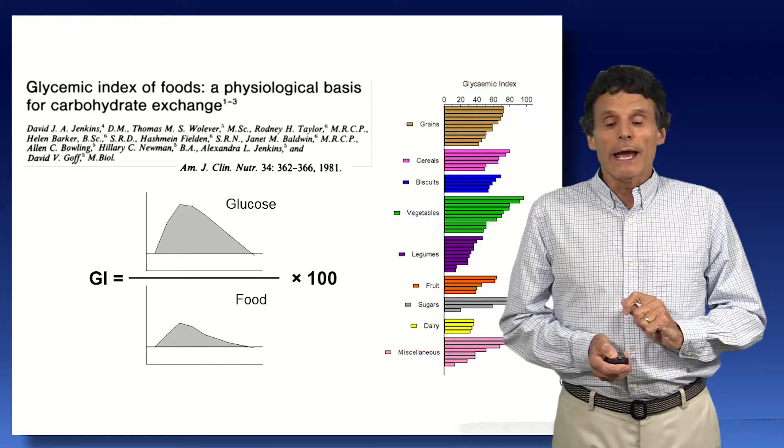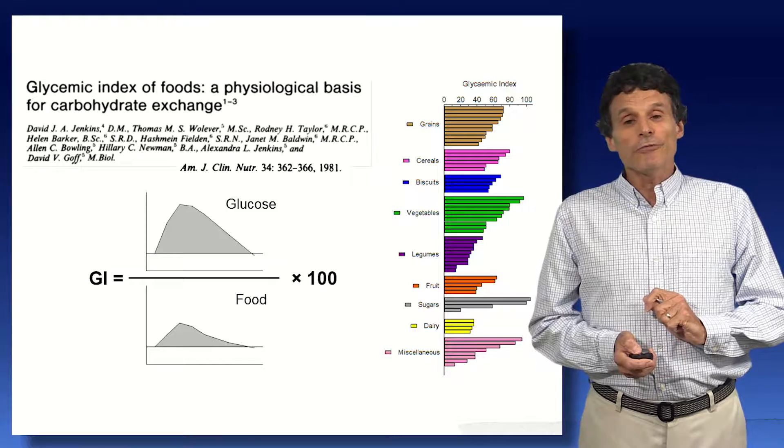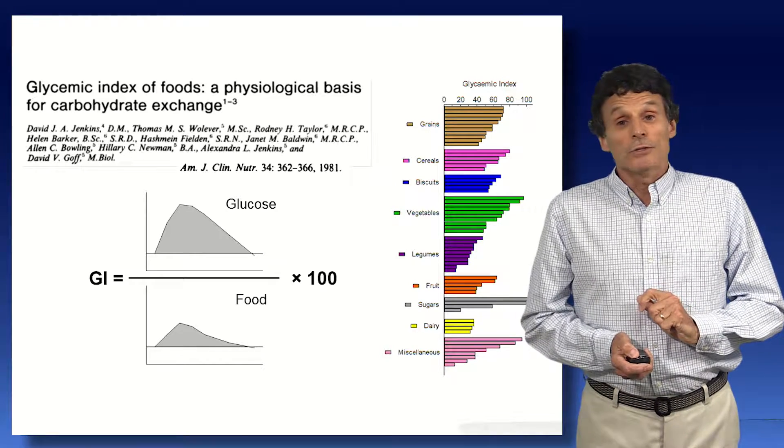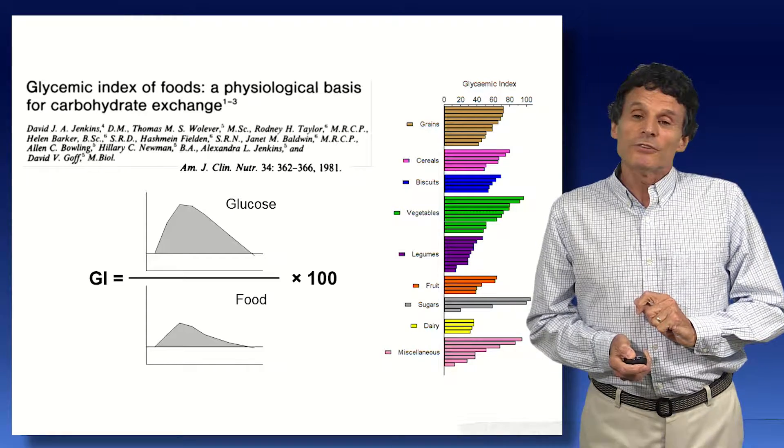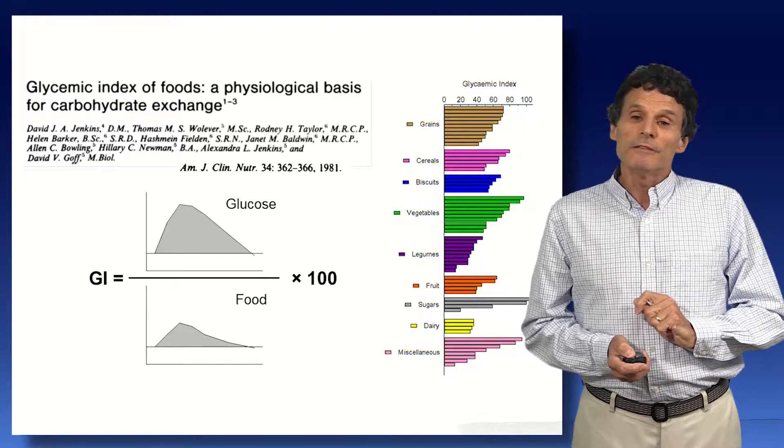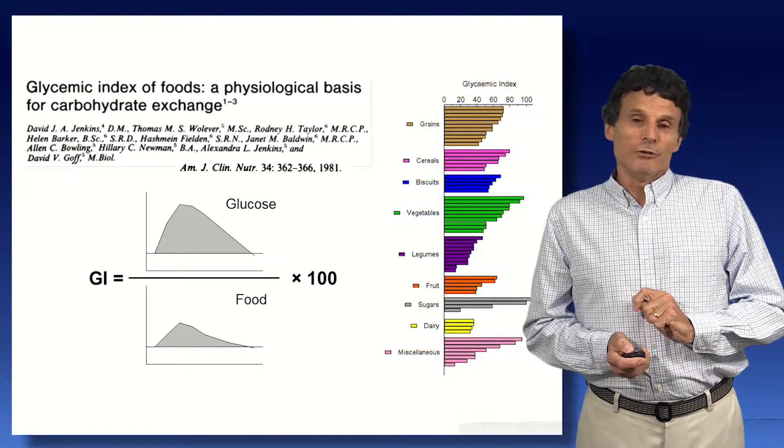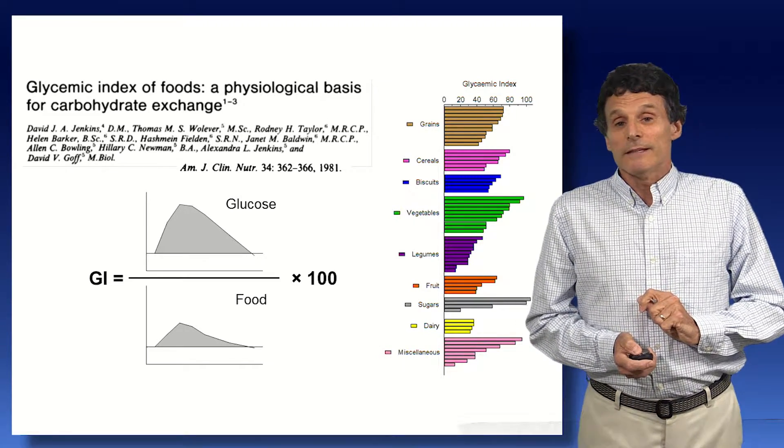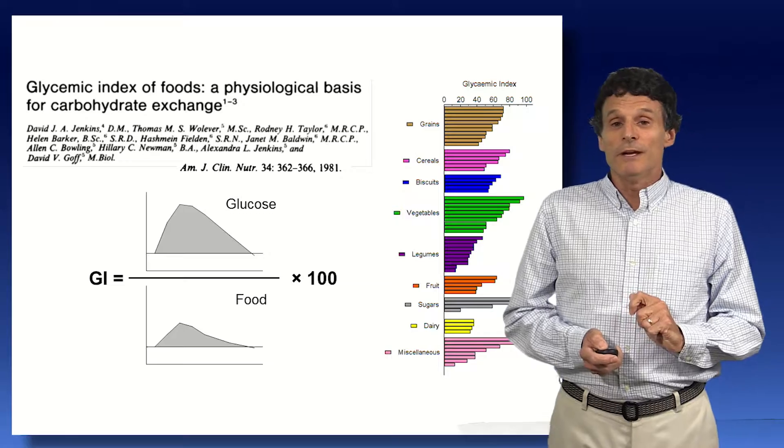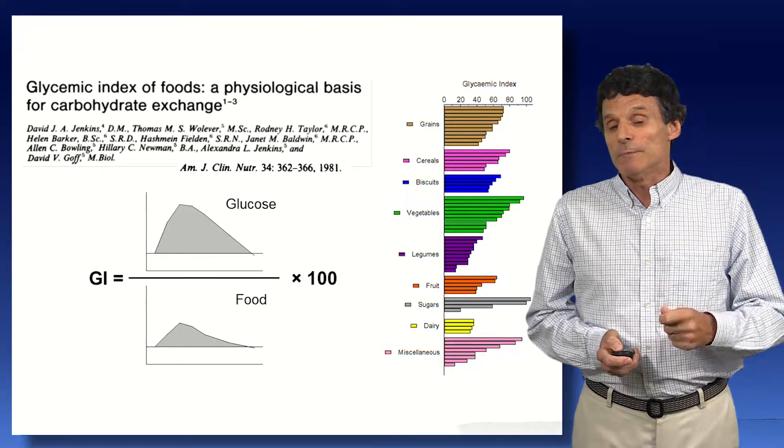And you can see right away that there's about a fourfold range of responses to equal amounts of carbohydrate in different foods. And the differences are very large, not only between the food groups, but within the food groups. So this suggested to us that this concept was important in terms of diabetes management. It might be useful.